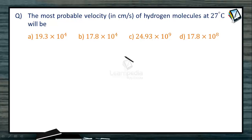This is a problem directly based on the formula related to the most probable velocity. Here we need to calculate the most probable velocity of hydrogen molecules at 27 degree centigrade. So what is the formula to calculate most probable velocity?